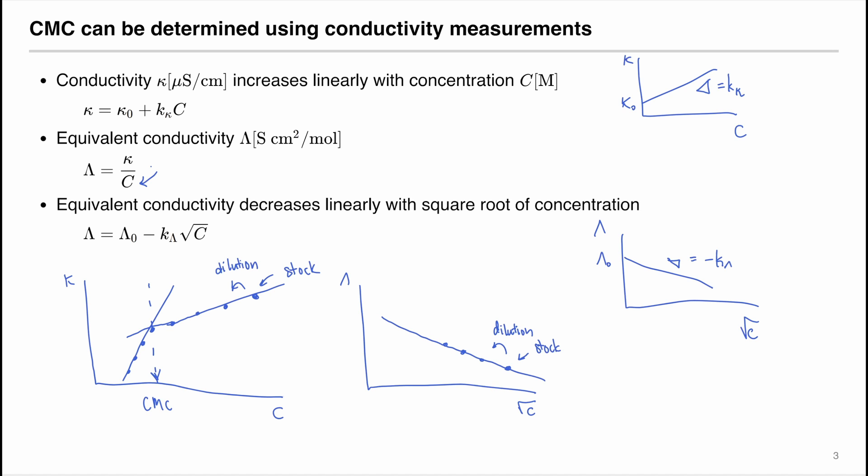However, at some critical micelle concentration, the slope might change. For example, let's say we have a greater slope. At that point, we can locate the critical micelle concentration. You should be able to verify using these two methods if the CMC matches or does not match and discuss why.